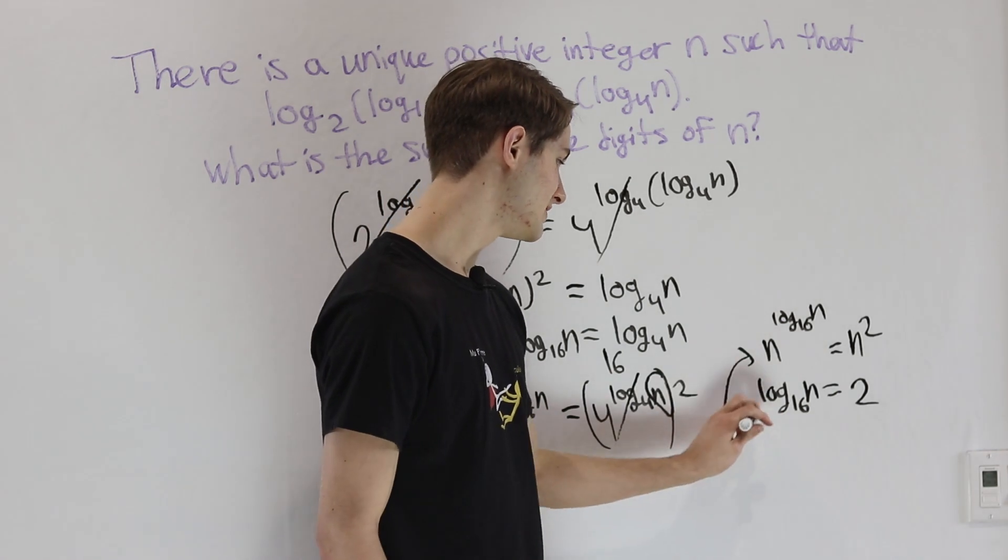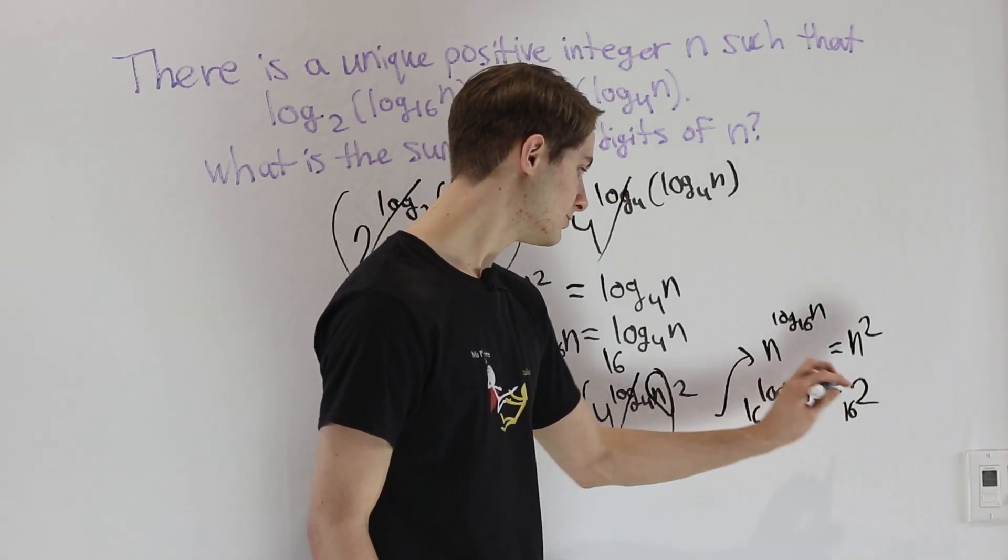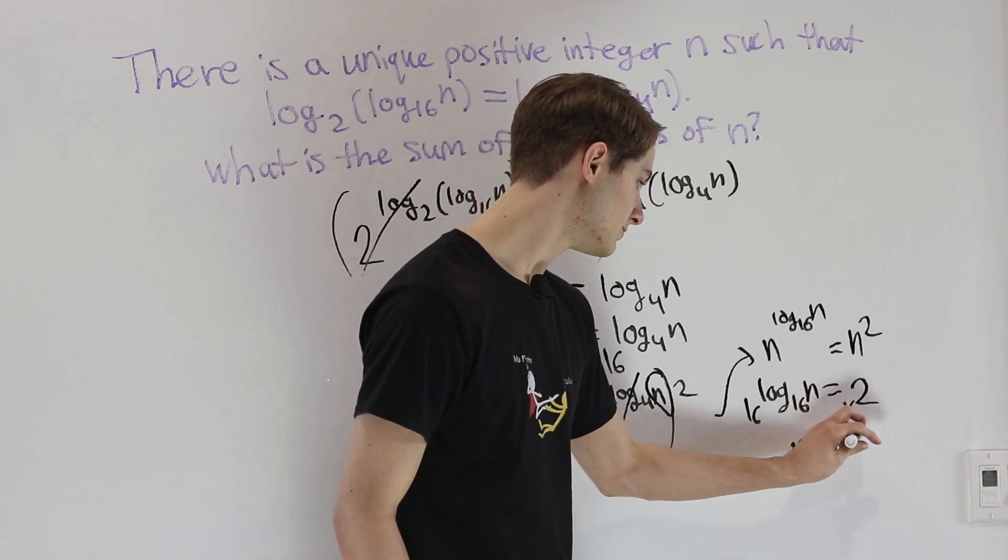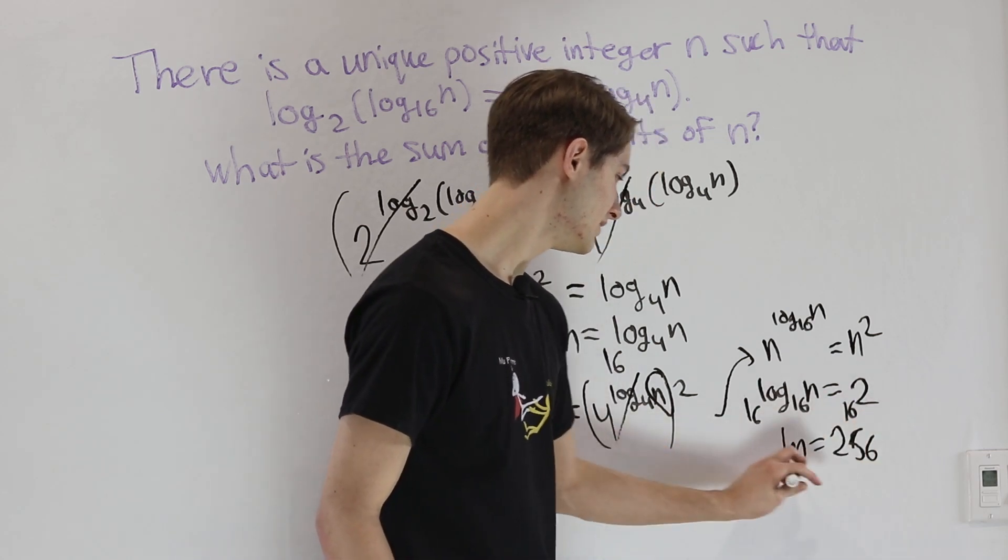Therefore, we can just take 16 to both sides and we get that n equals 16 squared, or in other words n equals 256.